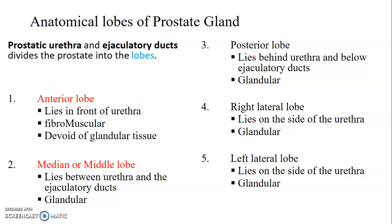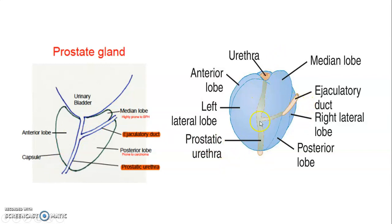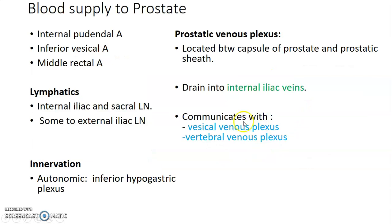The left and right lateral lobes lie on each side of the urethra. The anterior lobe is anterior to the urethra while the posterior lobe is posterior to the urethra but below the ejaculatory ducts. Above it is the median lobe. Then on each side we have the right and left lateral lobe. These are the ejaculatory ducts and that's the prostatic urethra.